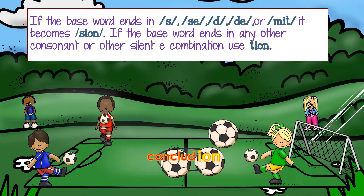Here we have the word 'conclude.' When a word ends in a D, it's too hard to say 'concludion,' so we change the D to an S and it becomes 'conclusion.' We take off the single silent E, change the D to an S, and then it becomes 'conclusion.' The conclusion of something is when something ends — it concludes.